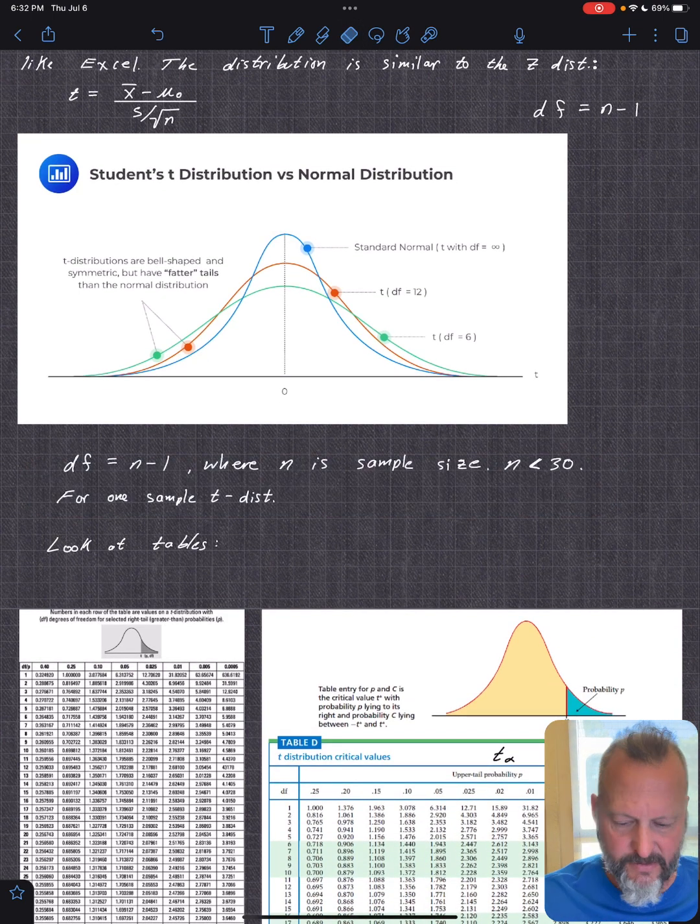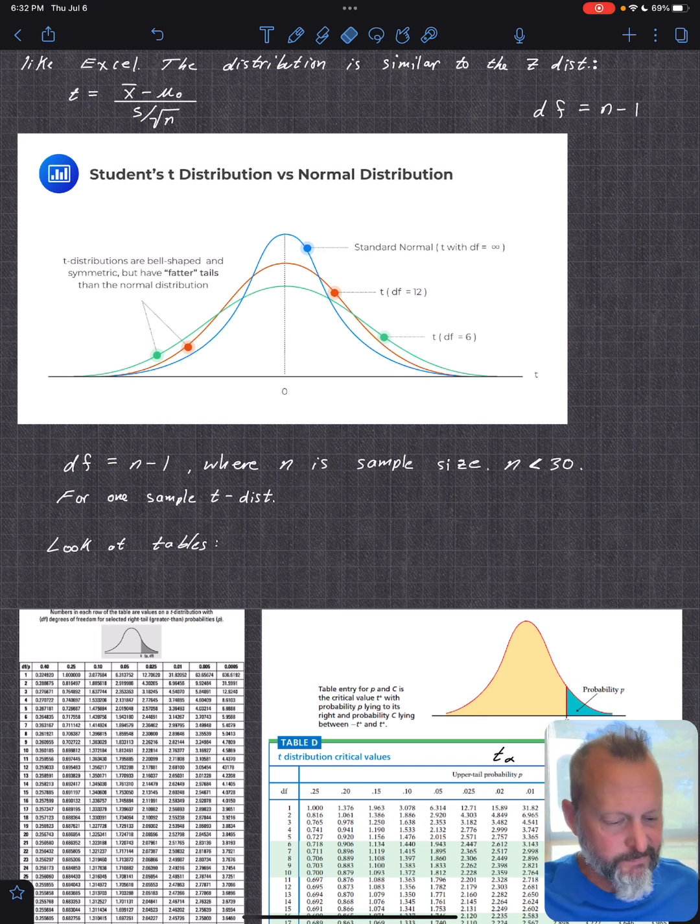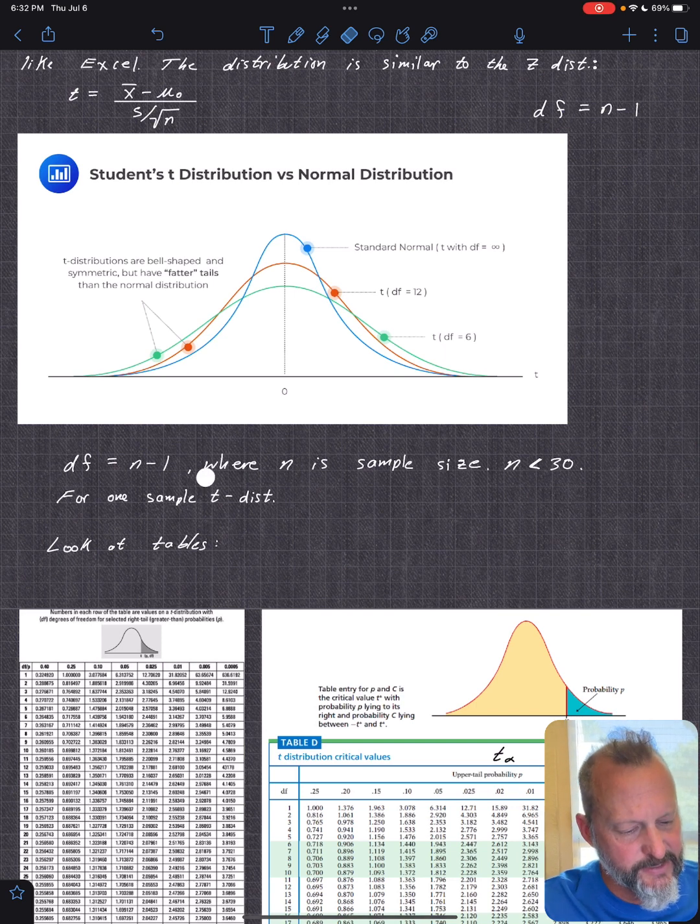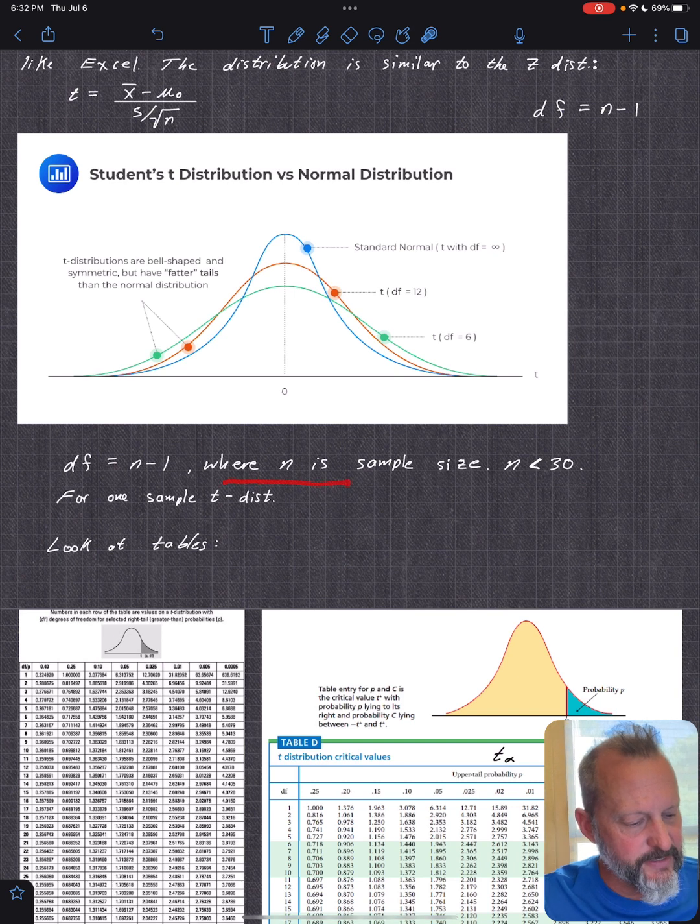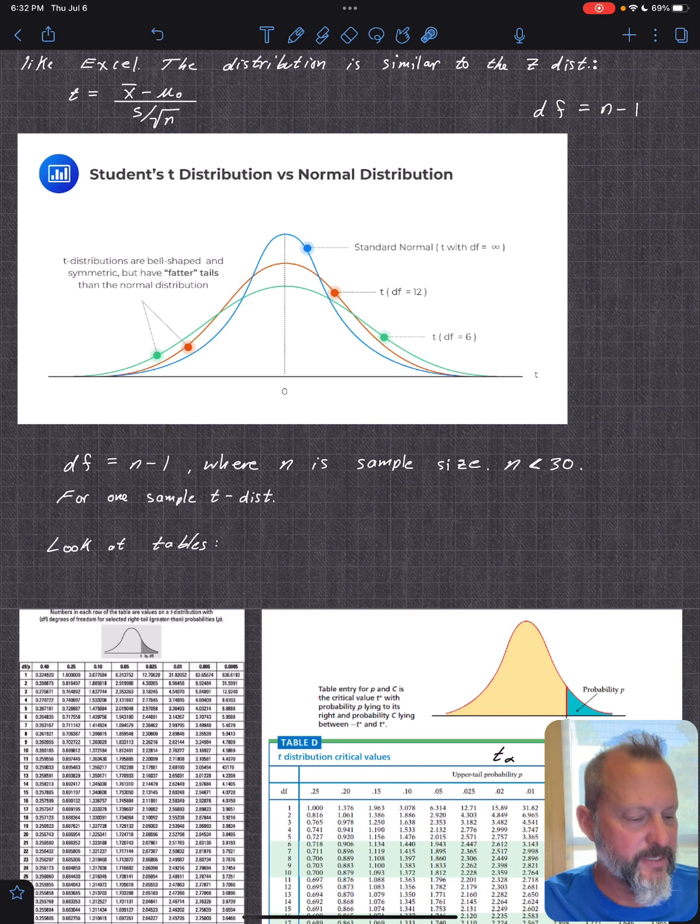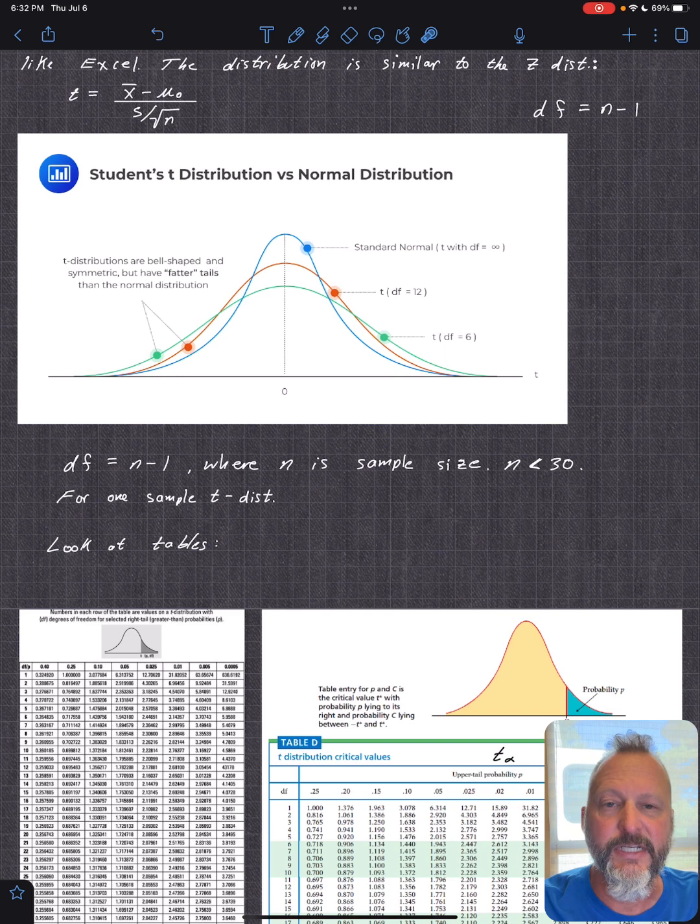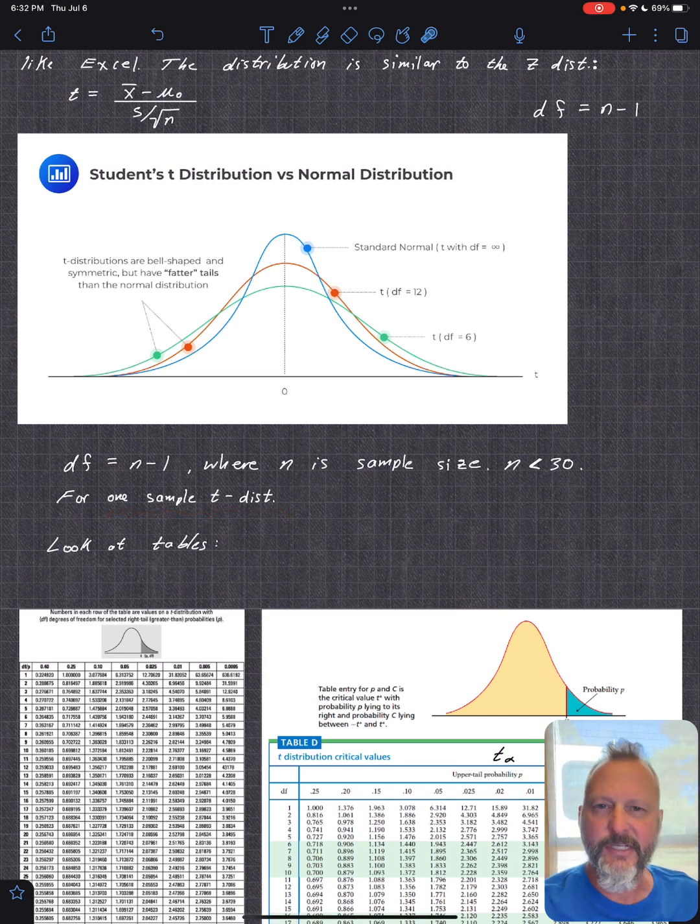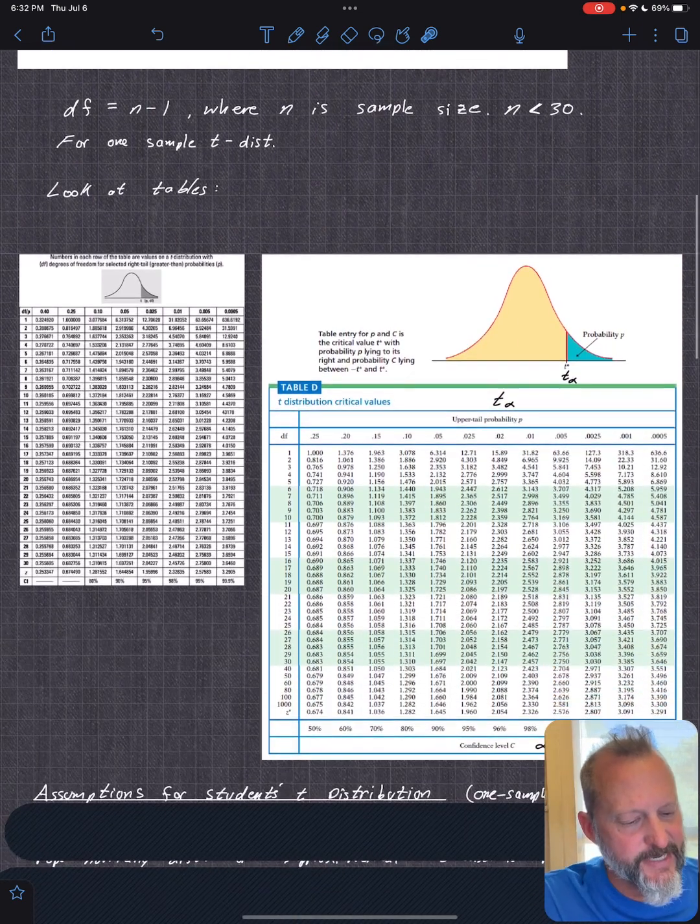Degrees of freedom, n is the sample size. We're specifically using this only when n is less than 30. When it's greater than 30, you can just use the Z tables. And this is specifically for one sample t distribution.